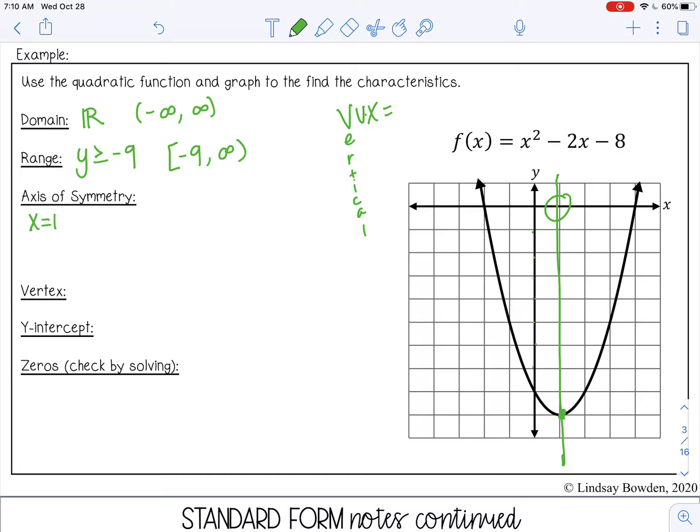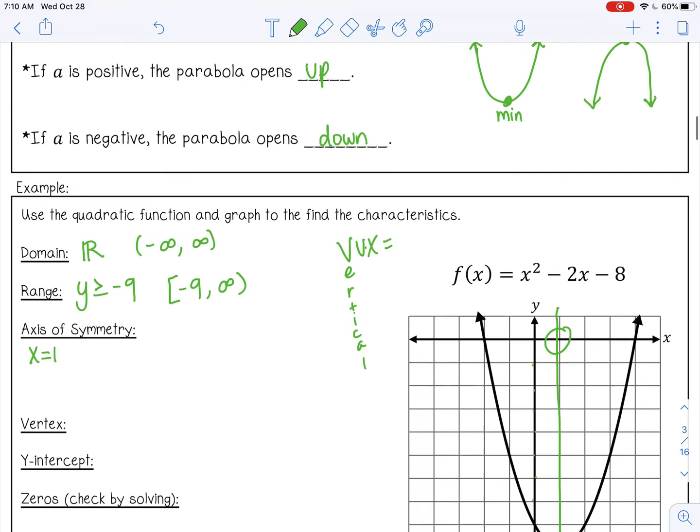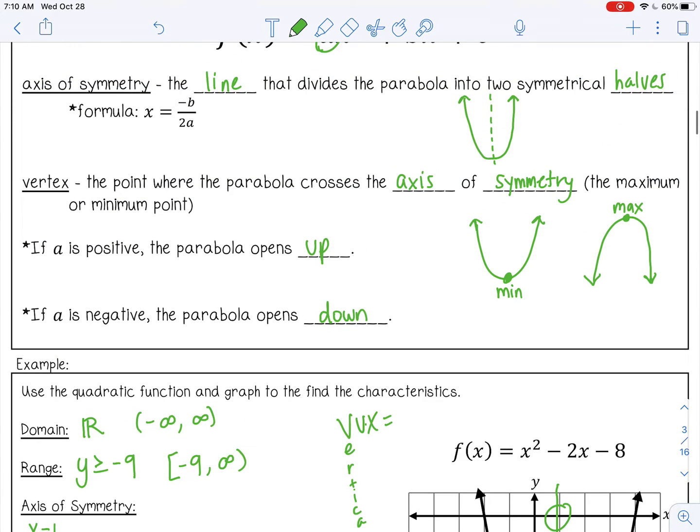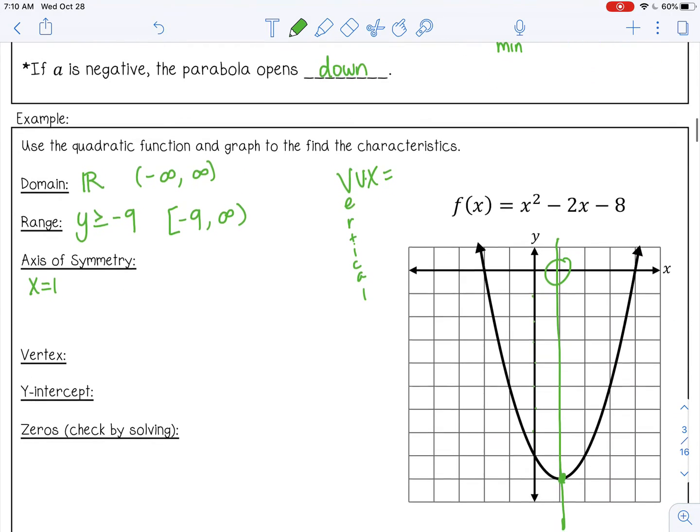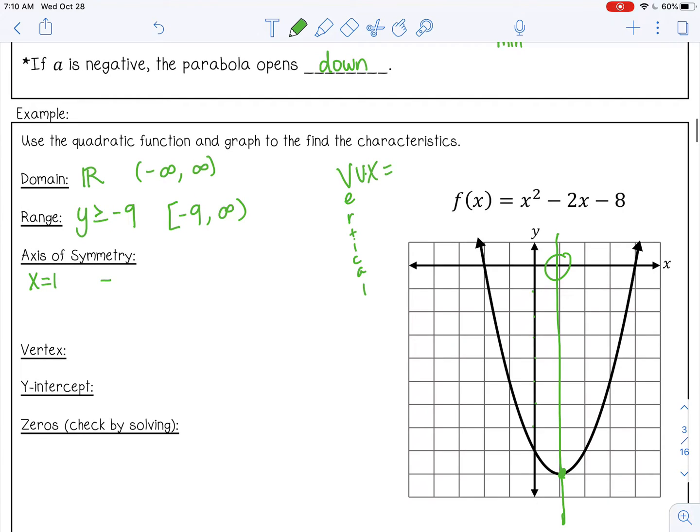But let's use the formula too and just prove it. So the formula is negative b over 2a. So negative b, negative negative 2 over 2a. My a is 1. So negative negative 2, that's a positive 2. 2 times 1, that's 2, which gives me 1. So if we didn't have the graph, we could still find the axis of symmetry.